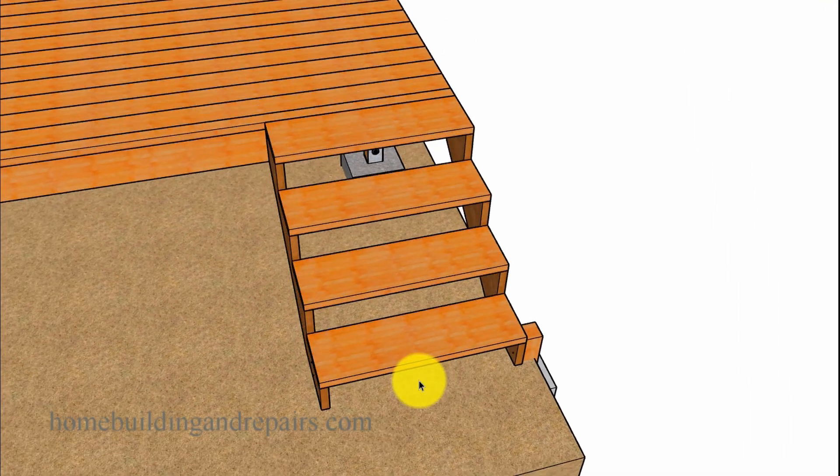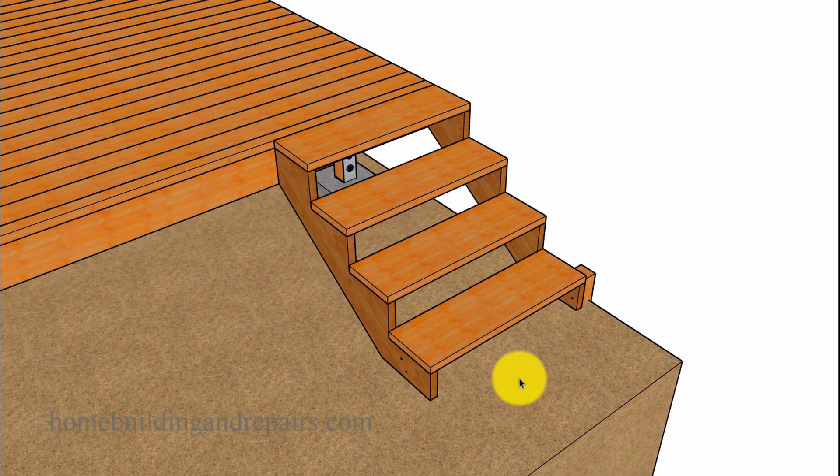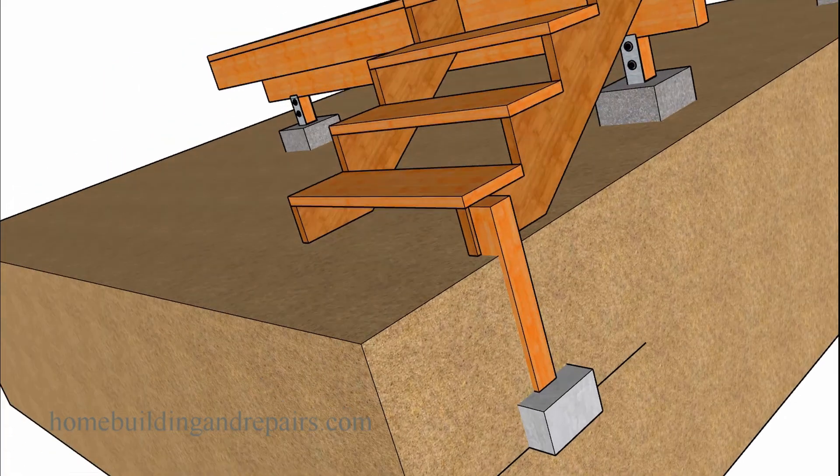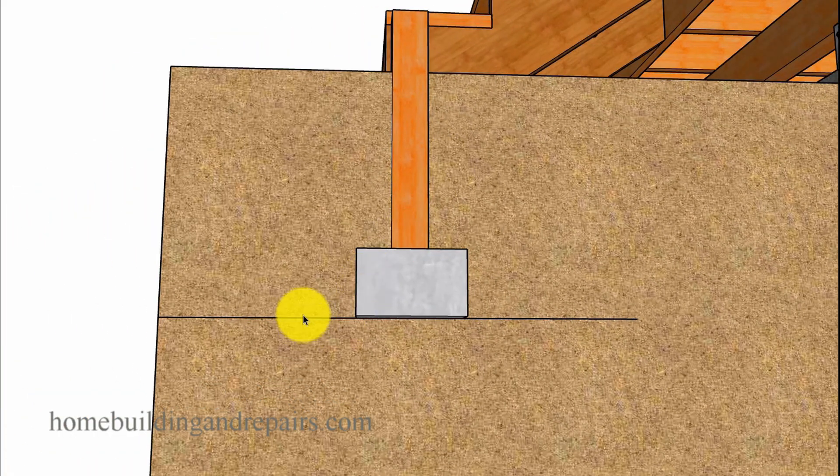This is what it would be without a handrail. If this post was to go up and it had a handrail on here, then this would require a different assembly method.